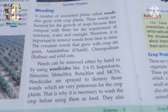Weeds can be removed either by hand or by using weedicides. Name some weedicides: 2,4-D, isoproturon, simazine, metachlor, butachlor, and MCPA. You can learn these — make a line and memorize them.